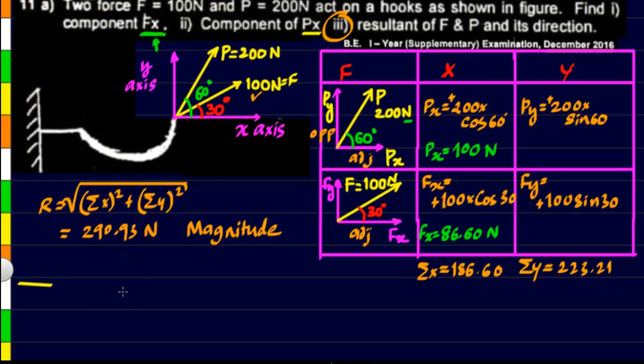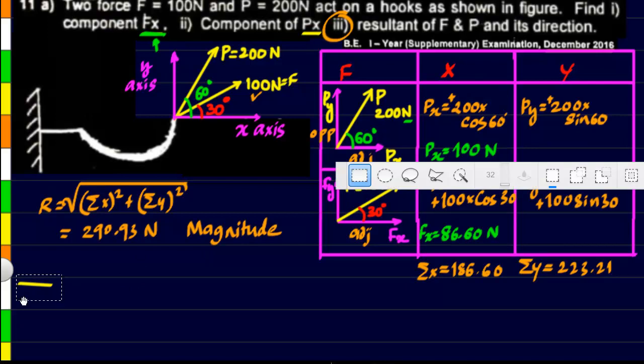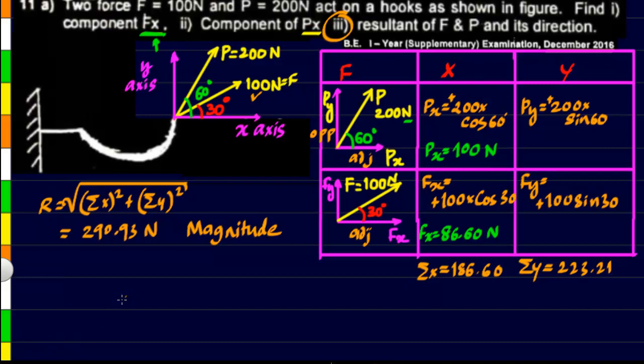Magnitude of the resultant. Now because the force is a vector quantity, magnitude alone will not be enough. We will also have to find its direction. So direction we will be finding as an angle with the x-axis or the horizontal axis. So let us call that angle as alpha, and the formula for that will be tan inverse of sigma y by sigma x.